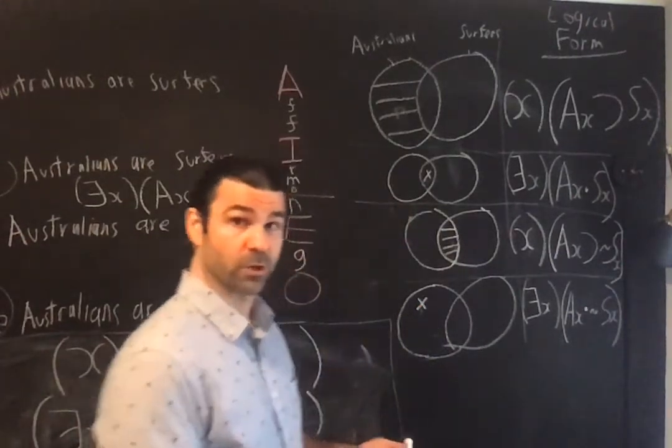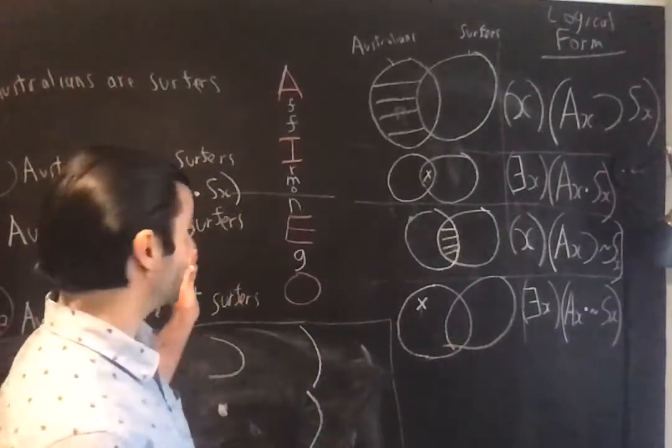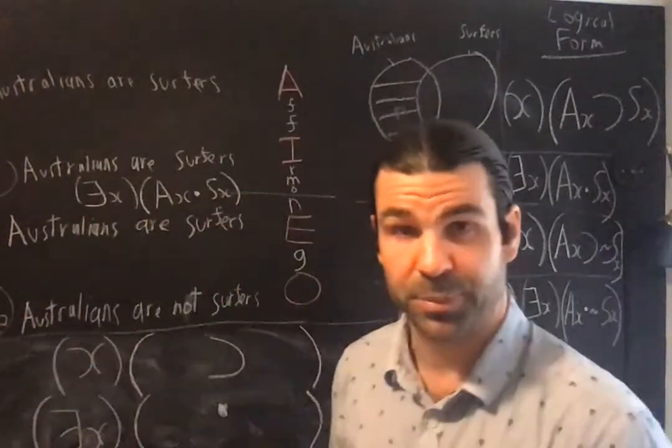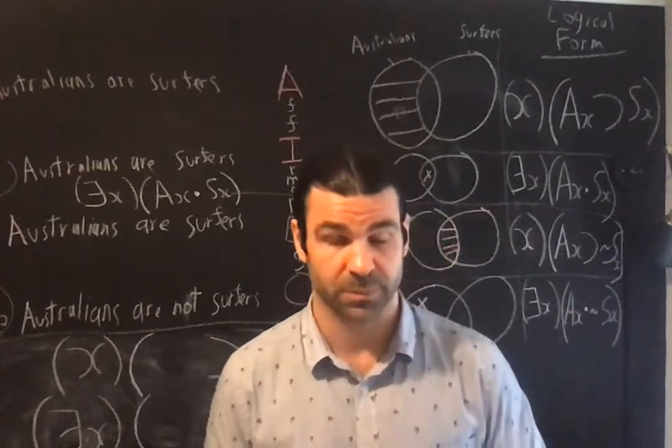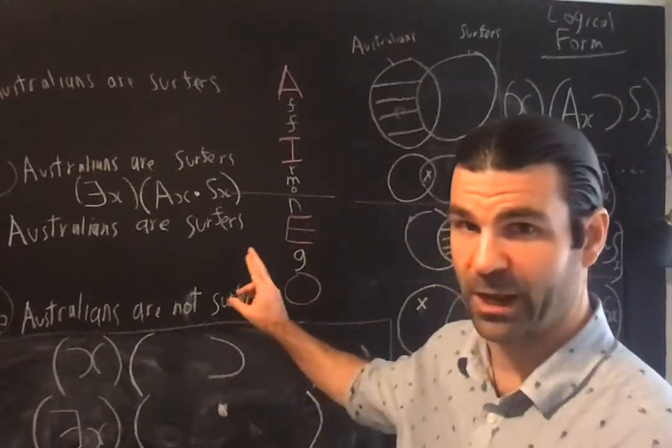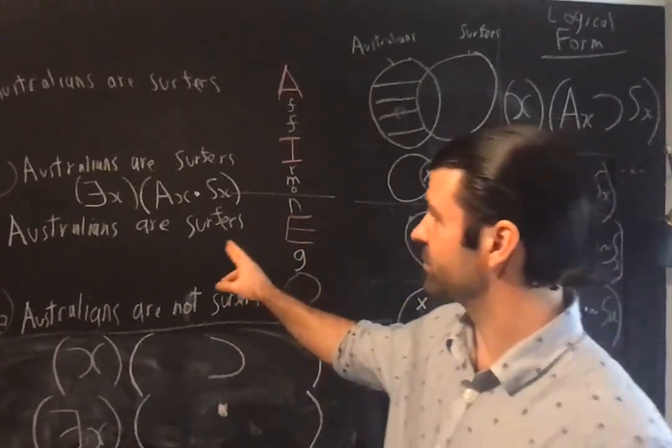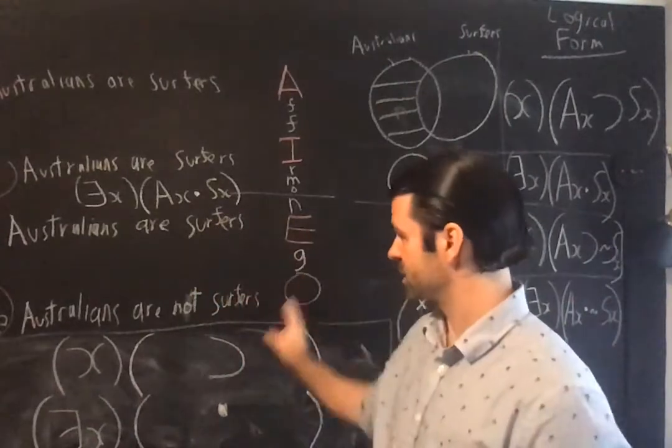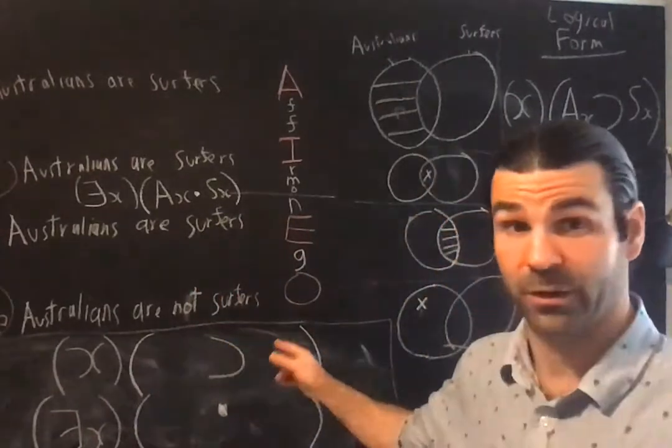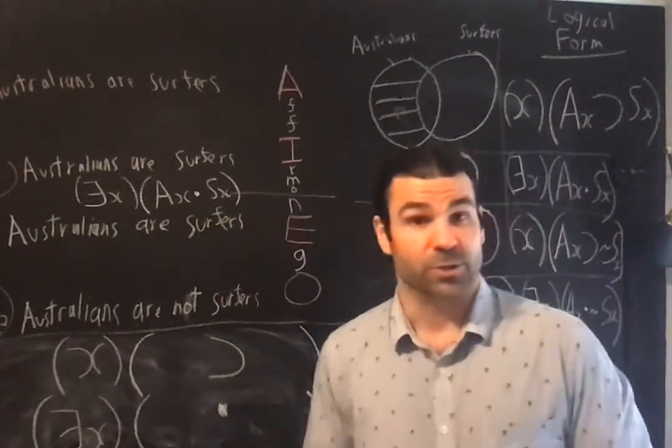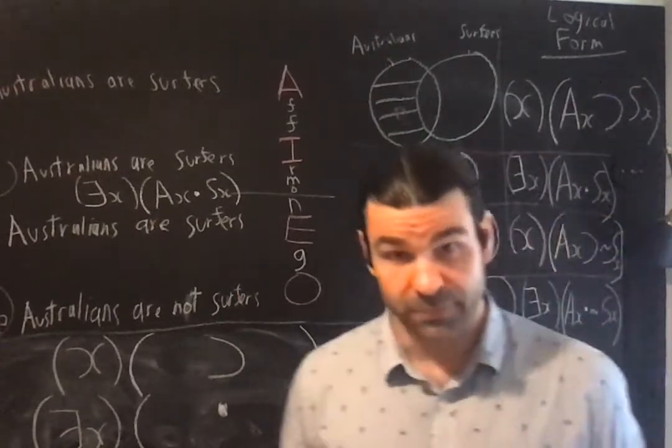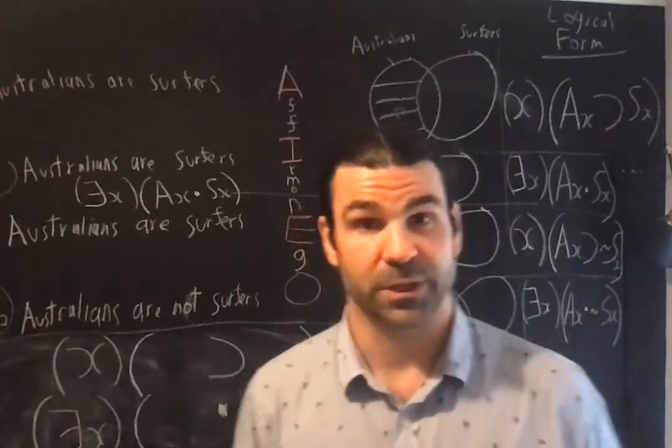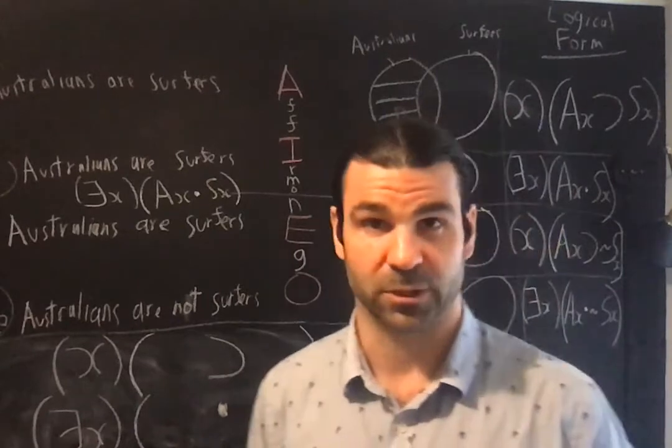Following her, I'll start with the particular inclusion and exclusion, that is the I and the O form. Things like some Australians are surfers, some Australians are not surfers. Those two have the word some in them—particular inclusion and exclusion.